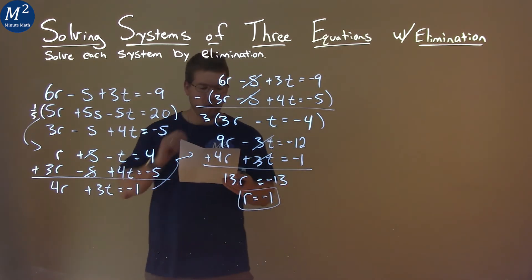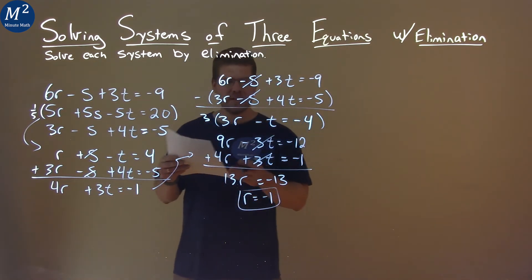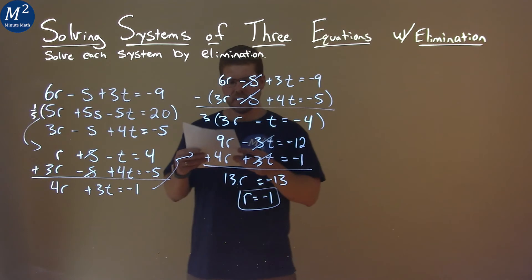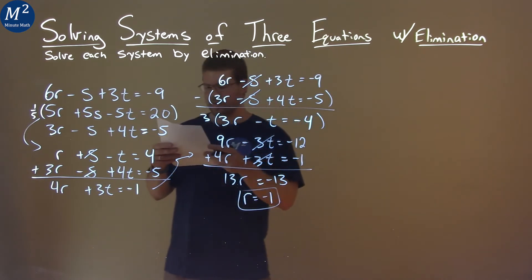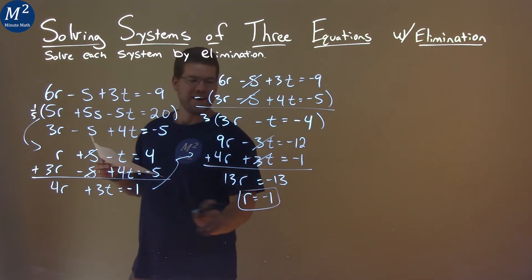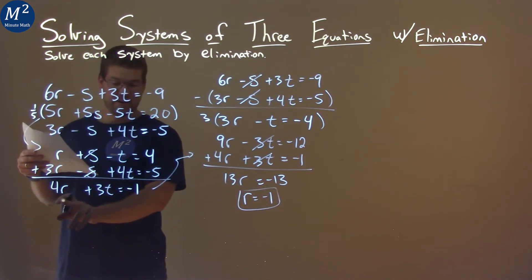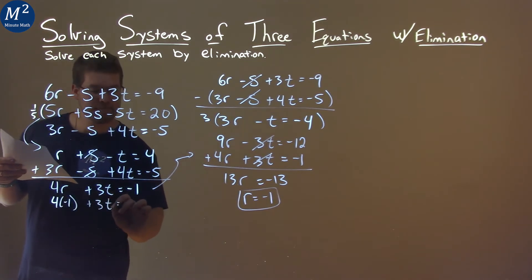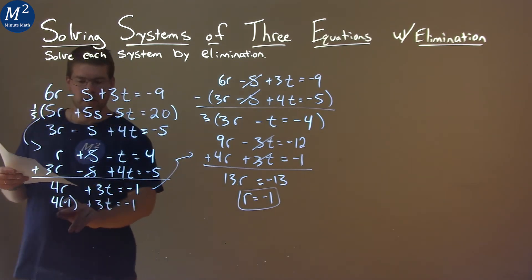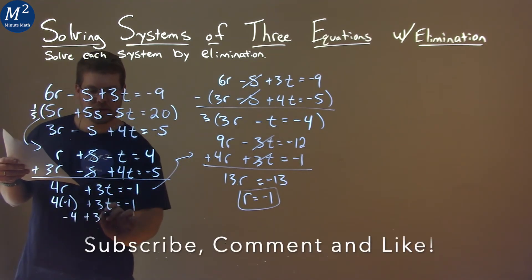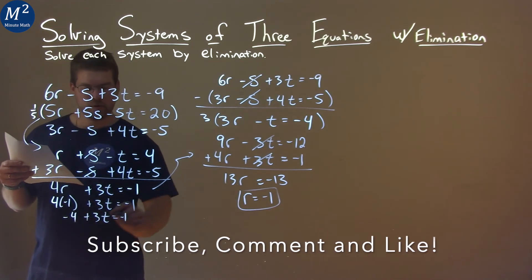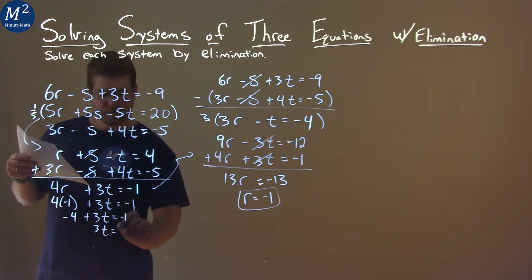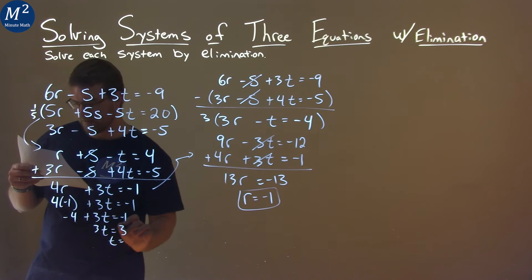So we have r equals negative 1 here. We need to get another variable. We'll solve for another variable. I've got to plug that r equals negative 1 to get my t value. Take this equation here. 4 times negative 1 plus 3t equals negative 1. And we can solve for t. 4 times negative 1 is negative 4 plus 3t equals negative 1. Add 4 to both sides. 3t equals positive 3. Divide both sides by 3, and t equals 1.